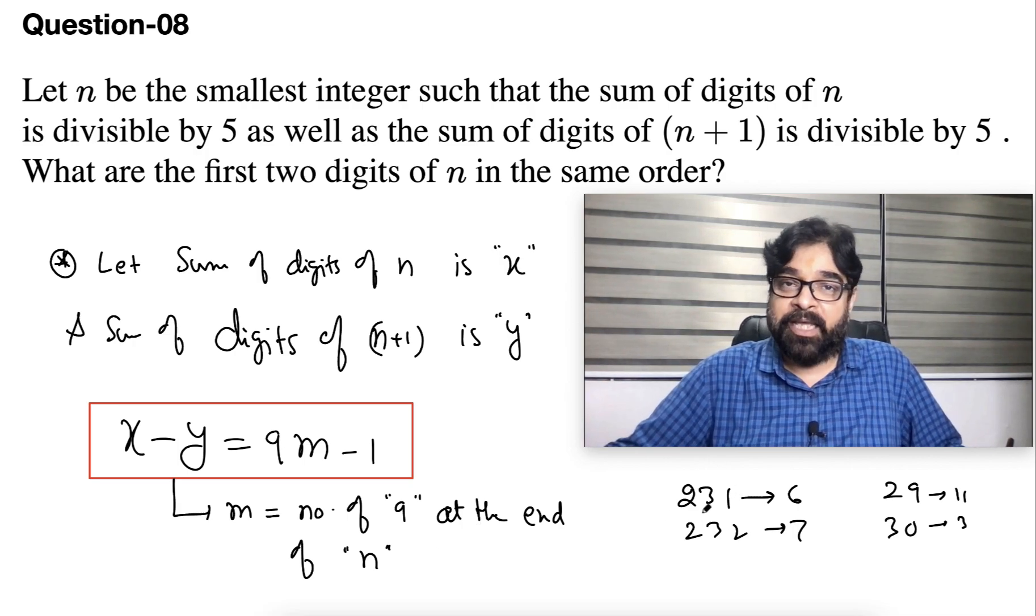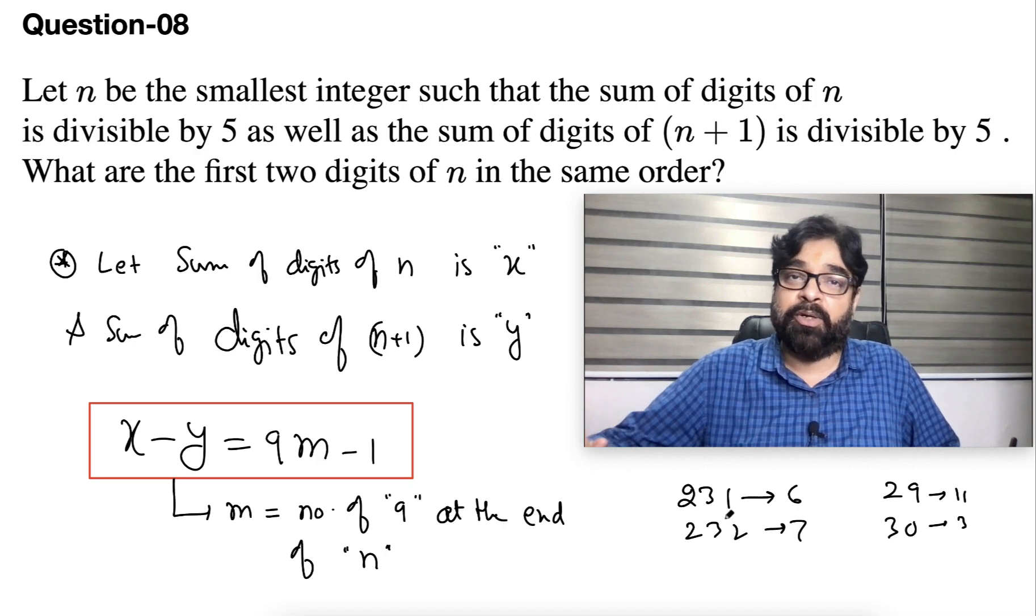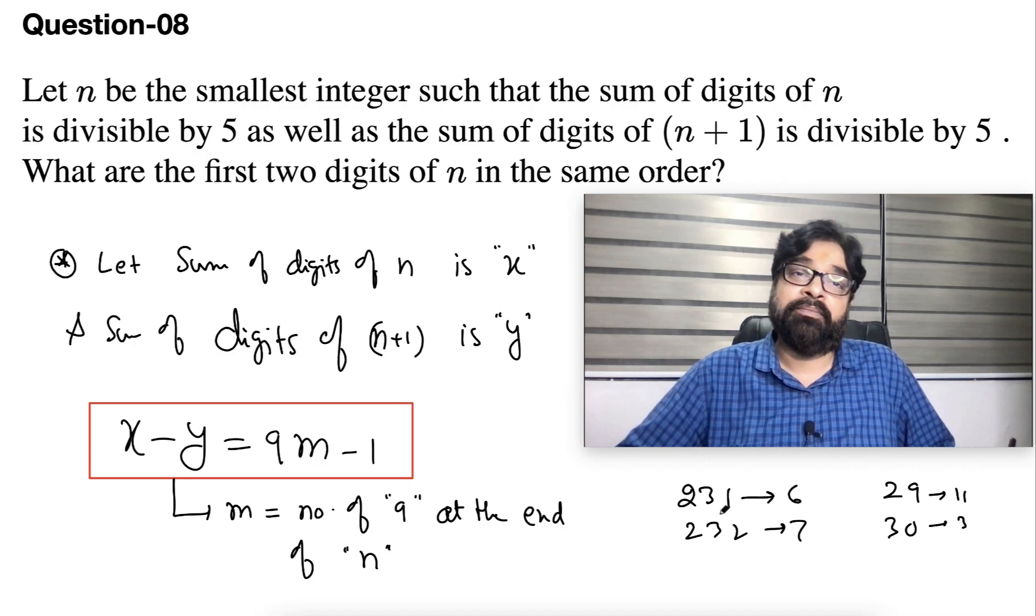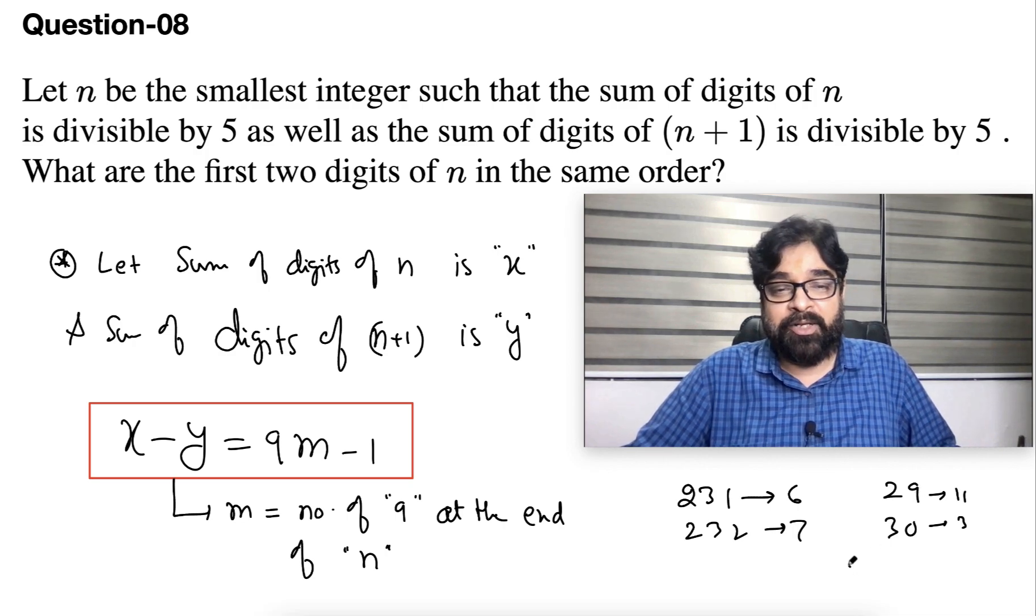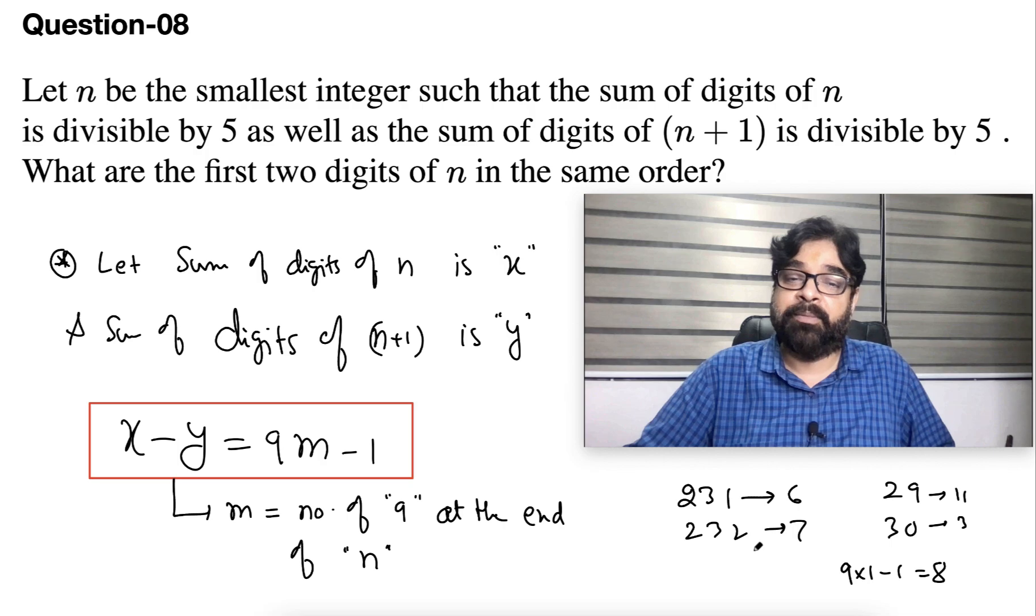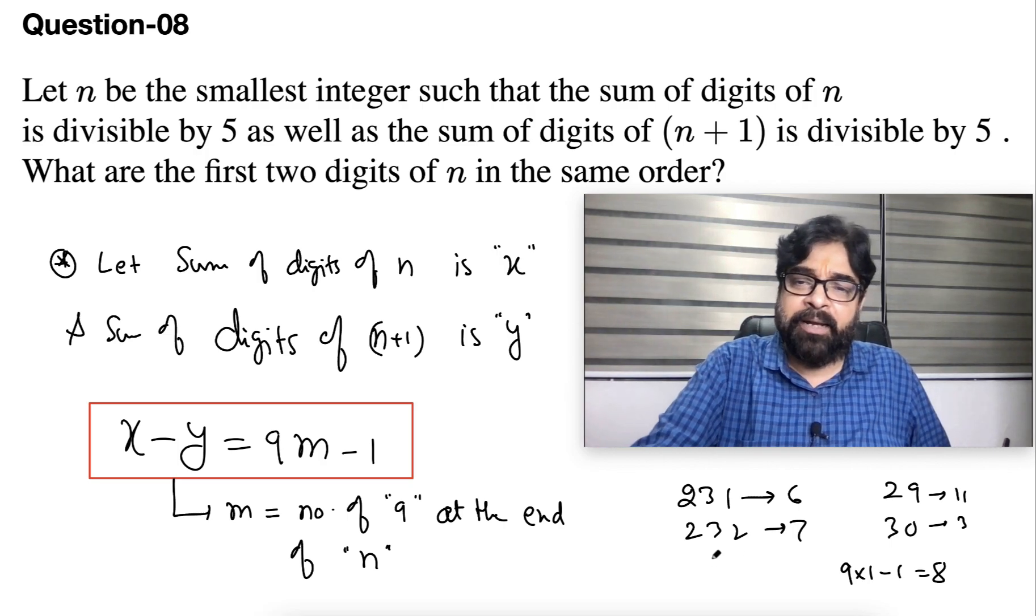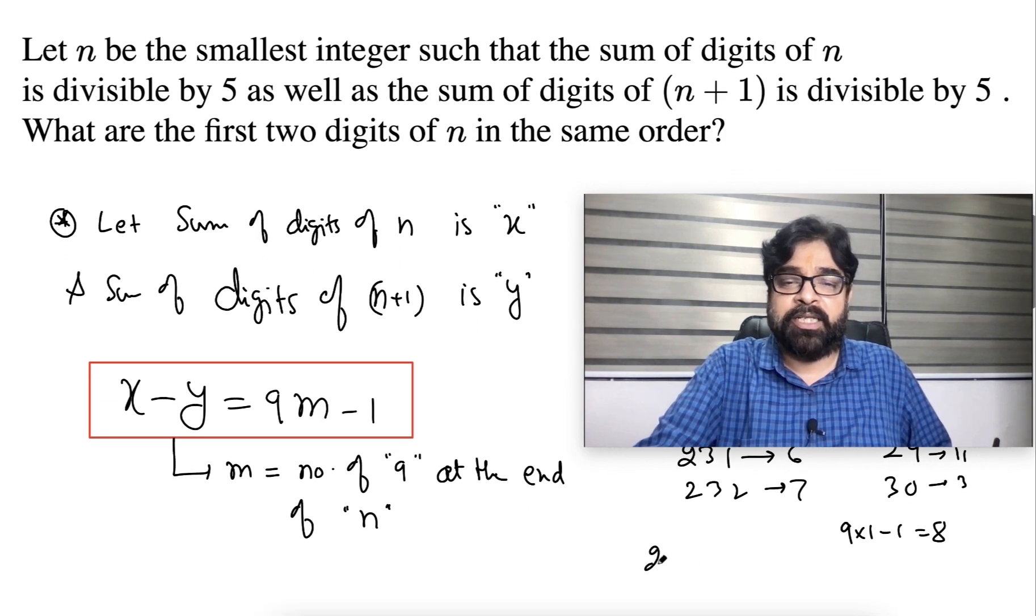x minus y equals 9m minus 1. What is the m, sir? m is number of 9 at the end of n. Then only the problem is tight. Understood my point? So suppose here I am saying, here number of 9 at the end is 0, so difference will be 1. Here, number of 9 at the end is 1, so we will say 9 into 1 minus 1, 8. And see, difference is coming. You take any, any random number, doesn't matter.